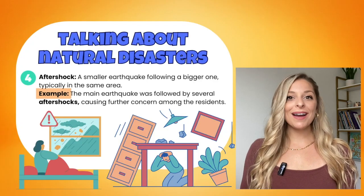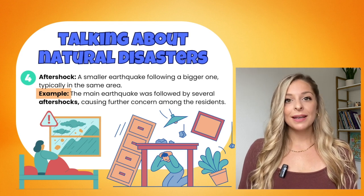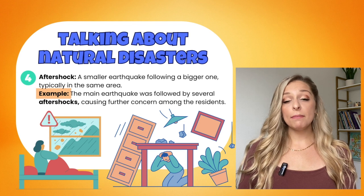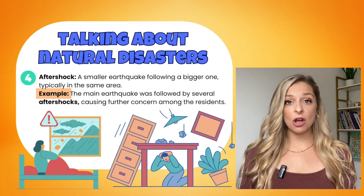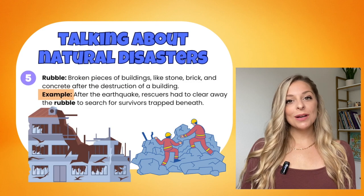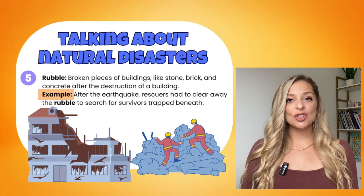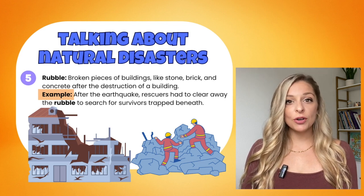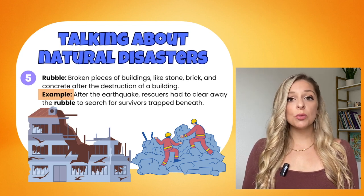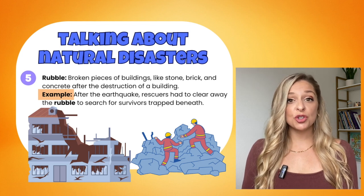Word number four is aftershock. This is a smaller earthquake following a bigger one, and it usually occurs in the same area. For example: the main earthquake was followed by several aftershocks, causing further concern among the residents. Word number five is rubble. This refers to broken pieces of buildings — like stone, bricks, and concrete — after the destruction of a building. For example: after the earthquake, rescuers had to clear away the rubble to search for survivors trapped beneath.